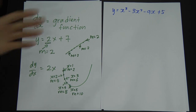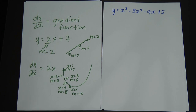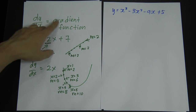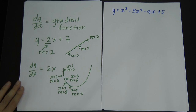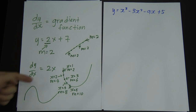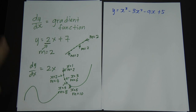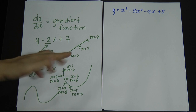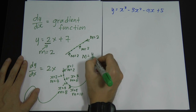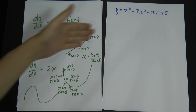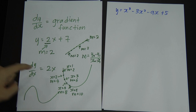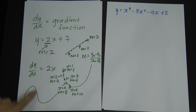We call it a gradient function because, like any function, it is related to x. So when you see 'gradient function,' it means it is the gradient for the curve — whether it's a quadratic curve or a cubic curve. For a curve, if you want to find the gradient you have to do differentiation. For a straight line, you just use the formula (y₂ - y₁) / (x₂ - x₁). That is why differentiation comes in.